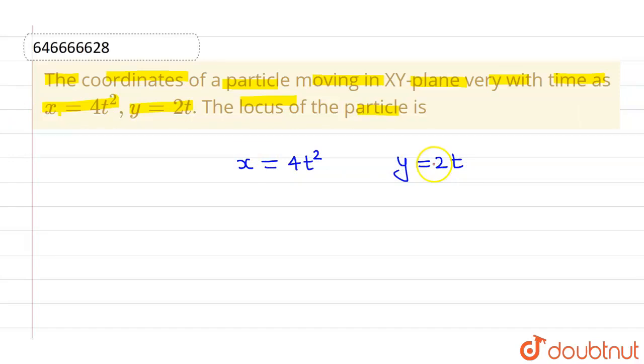Now for eliminating t, I will simply find out the value of t from here and put it in this equation. From here, the value of t is nothing but y over 2.